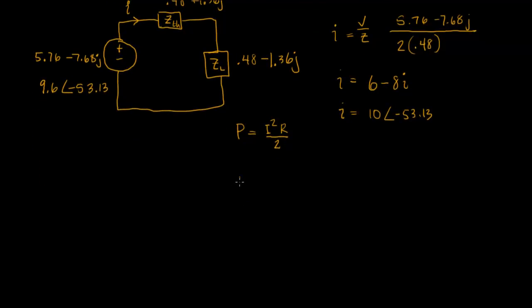And so now power simply equals I squared, which is 10 squared, times R. And remember we're doing the power absorbed by the load. So we're just looking at a single resistor here. Recall that with the complex form, the real part of the complex form is the resistance. So that's going to be .48. And the whole thing divided by 2. And if you solve that out, you will find that this equals 24 watts.